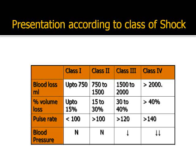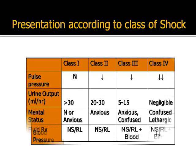In class 3 shock, the loss is between 30 and 40%, up to about 4 units of blood. And in class 4 shock, which is the worst class of shock, the loss is more than 40%, and that is more than 4 units of blood. The pulse rate is markedly increased and the blood pressure is markedly reduced. These classes further present with changes in pulse pressure, urine output, and mental status, as shown in this table.